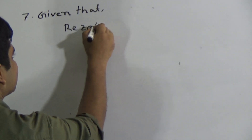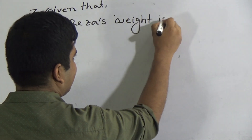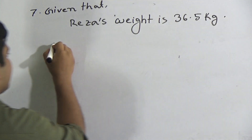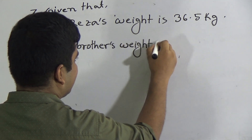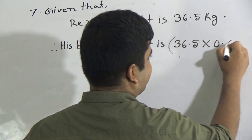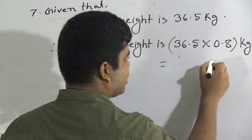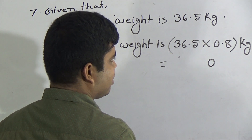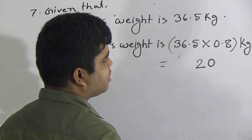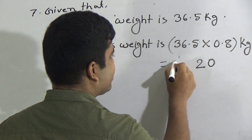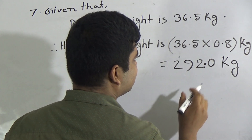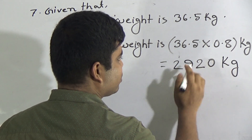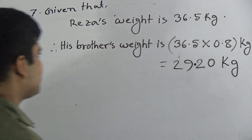So first of all, we write: given that Reza's weight is 36.5 kg. Therefore, his brother's weight is 36.5 multiplied by 0.8 kg. We do the multiplication: 8 × 5 = 40 carrying 4, 8 × 6 = 48 plus 4 = 52, write 2 carrying 5, 8 × 3 = 24 plus 5 = 29. After point, how many digits? One digit. So here we place the point. So 29.2 kg is the weight of his brother.